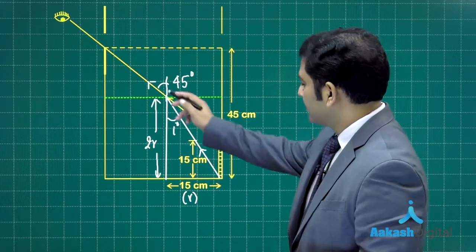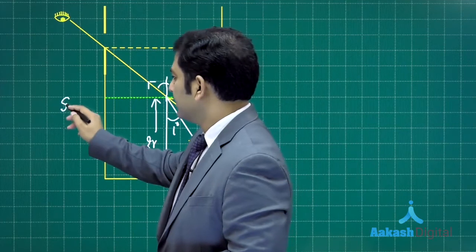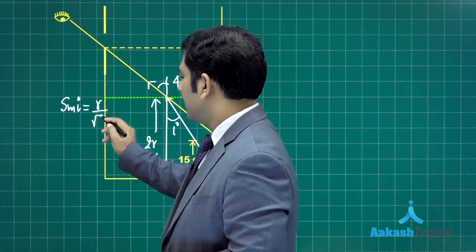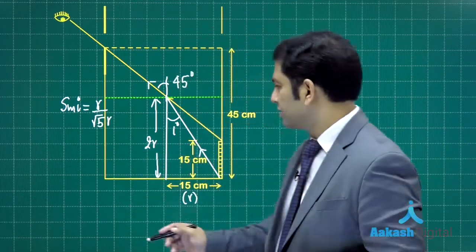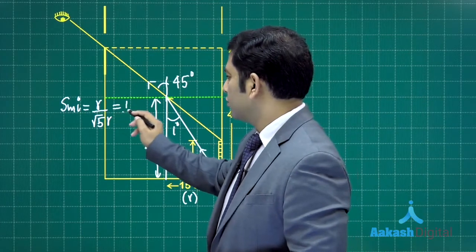In this triangle if I apply, I will be getting sine i is perpendicular by hypotenuse. That's simple geometry here, and that's going to be 1 by root 5.